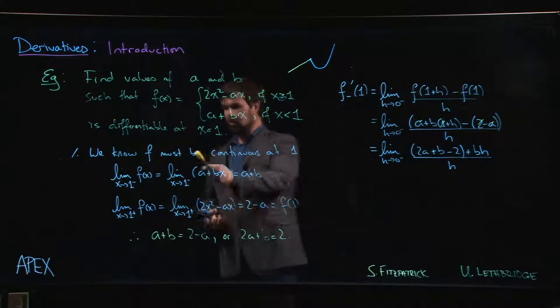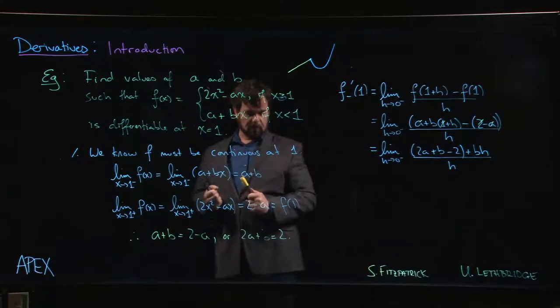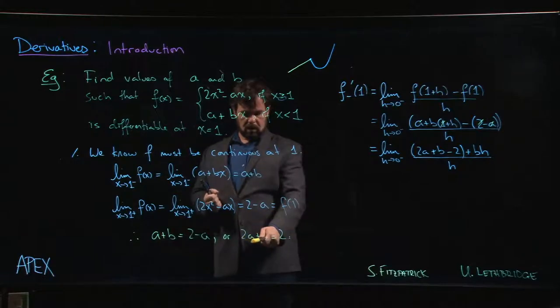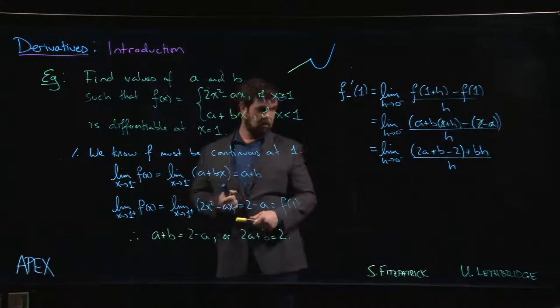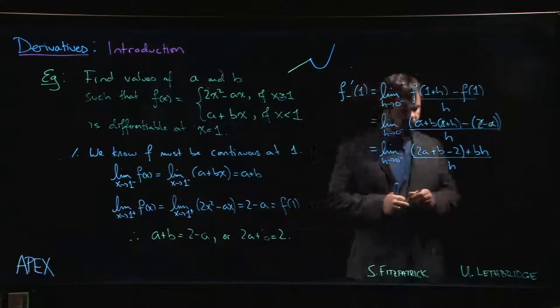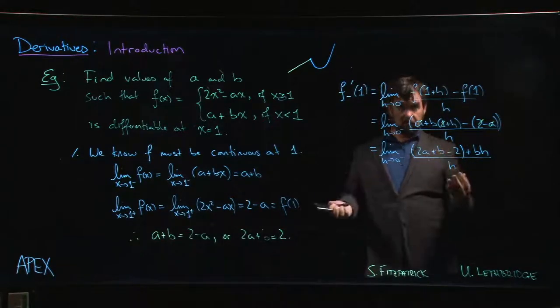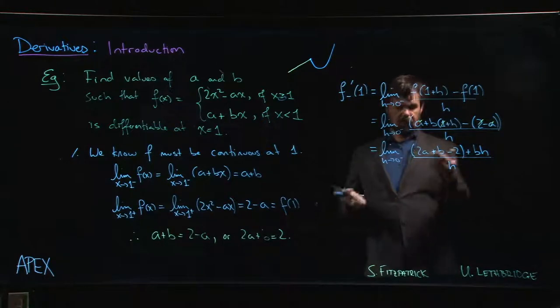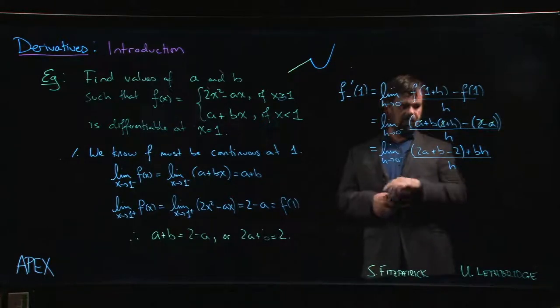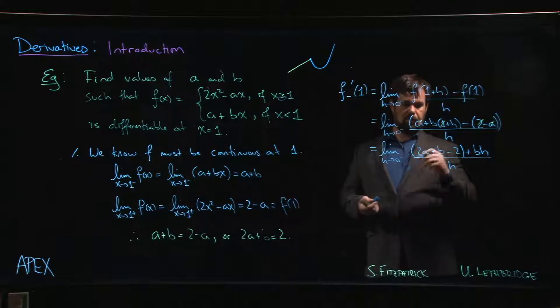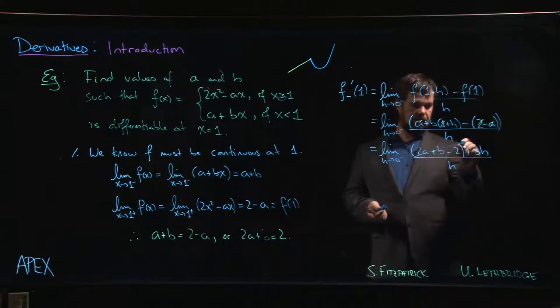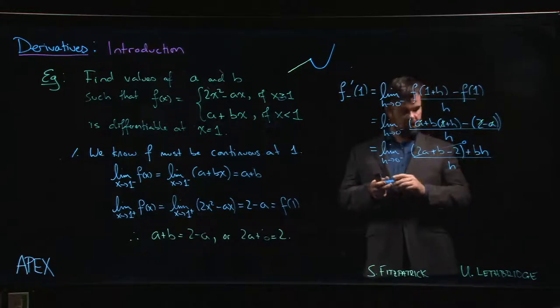All right, so that looks kind of complicated, but here's where continuity comes in. Because we know that f has to be continuous in order for it to be differentiable, 2a + b - 2, that's zero. So you can kind of see that continuity condition popping up here as well. If this wasn't zero, the limit wouldn't exist. So here again we see why the function has to be continuous in order for it to be differentiable.